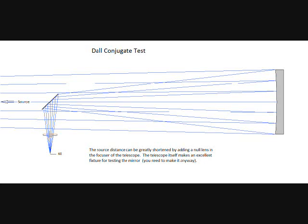But an easy solution is to use the Dall conjugate test, which is a similar test, but it uses a plano-convex lens near focus to null out the residual under correction from the ellipse. With this test, you don't need to make a Foucault tester. You can build the telescope first and use it as a test fixture.